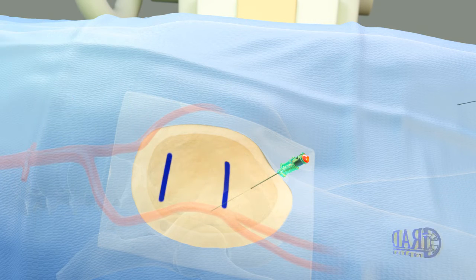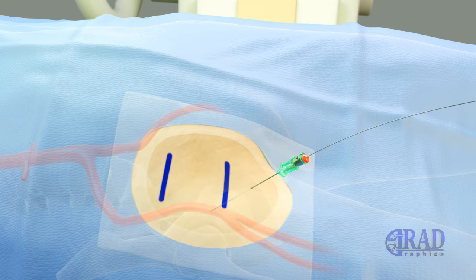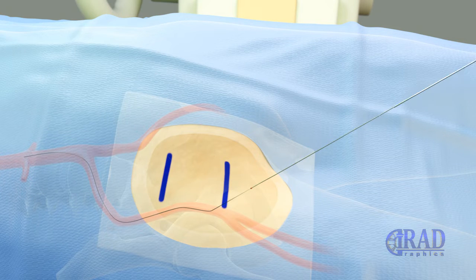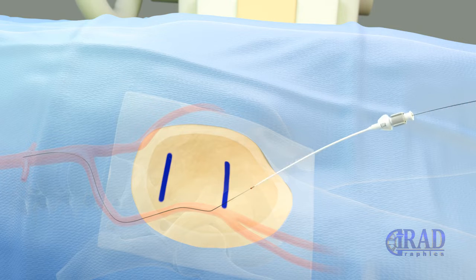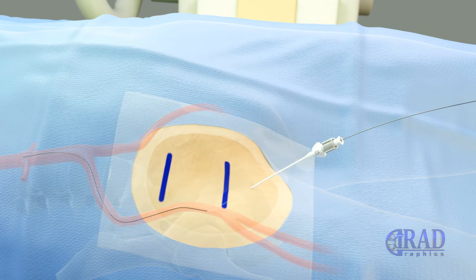Upon observing blood return, a microwire is inserted through the needle into the artery. Subsequently, the needle is exchanged for a transitional sheath, and the transitional sheath is advanced over the microwire.